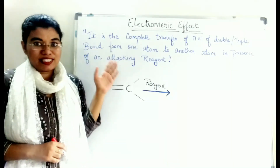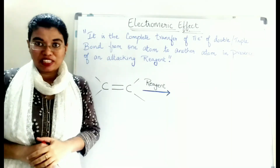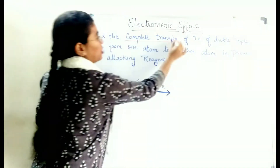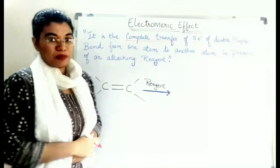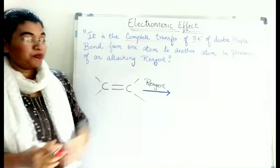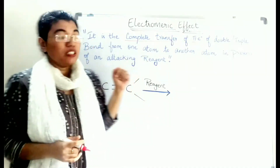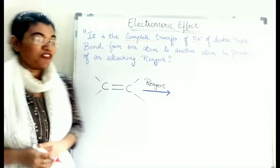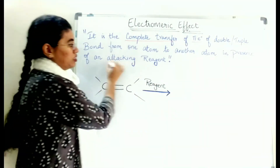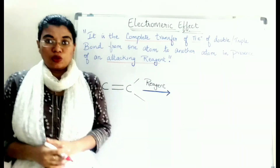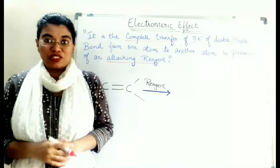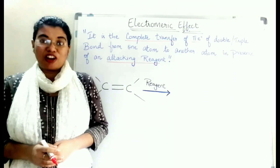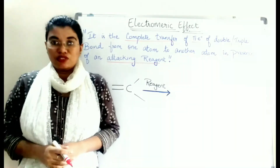First of all, you have to understand what the Electromeric effect is — it is the complete transfer of pi electrons of the double or triple bond from one atom to another atom in the presence of an attacking reagent. Whenever an attacking reagent is present, there will be a complete transfer of pi electrons from the double or triple bond.